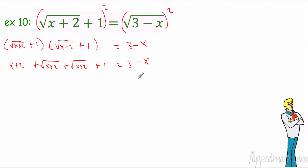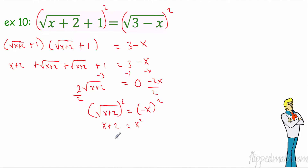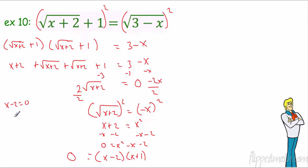Subtracting the x terms and combining gives 2 times the square root of x plus 2 equals negative 2x. Dividing by 2: the square root of x plus 2 equals negative x. Squaring both sides again: x plus 2 equals x squared. Subtracting x and subtracting 2 gives 0 equals x squared minus x minus 2. Factor using two numbers that multiply to negative 2 and add to negative 1 — that's x minus 2 times x plus 1 equals 0.